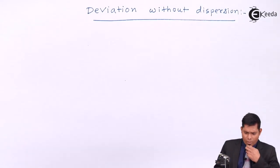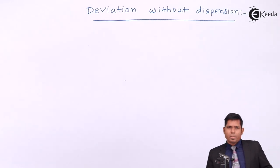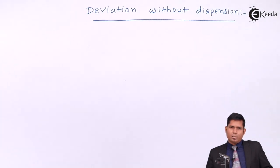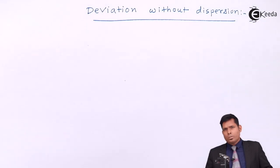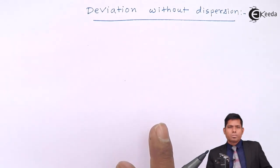But now what we can do — how we can have a situation where one thing will happen and the other thing will not happen. For a single prism both will happen: dispersion and deviation. But for certain arrangements, we will have only one — either dispersion or deviation — both will not happen simultaneously. Today's topic is deviation without dispersion.